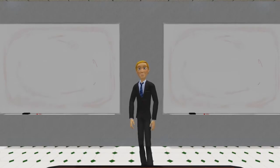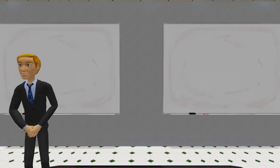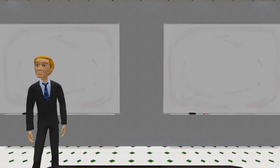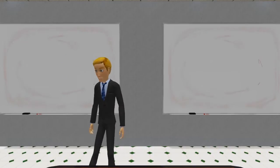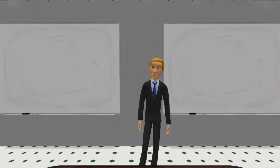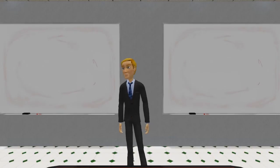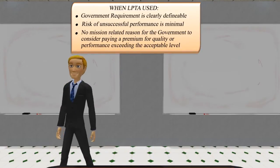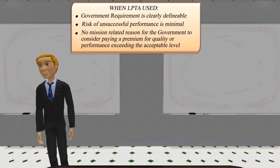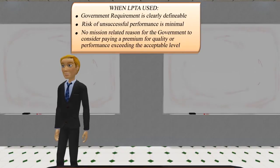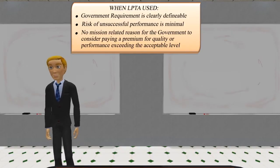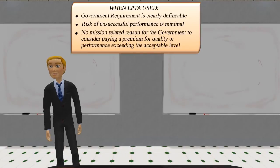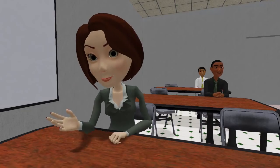The lowest-price technically acceptable basis for award should be used whenever the best value to the government is expected to result from selecting a proposal that is technically acceptable and has the lowest-evaluated price or cost. This would normally be the case where the government requirement is clearly definable, the risk of unsuccessful performance is minimal, and there is no mission-related reason to consider paying a premium for quality or performance exceeding the acceptable level.